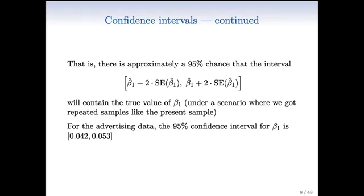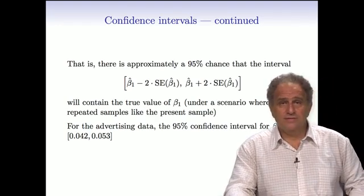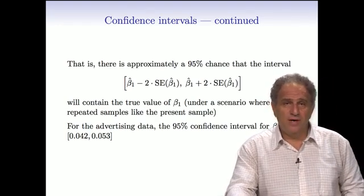For the advertising data, the confidence interval for beta 1 is 0.042 to 0.053. This is for TV sales. So this tells me that the true slope for TV advertising is, first of all, greater than zero. In other words, having TV advertising does have a positive effect on sales, as one would expect. That completes our discussion of standard errors and confidence intervals. In the next segment, we'll talk about hypothesis testing, which is a closely related idea to confidence intervals.